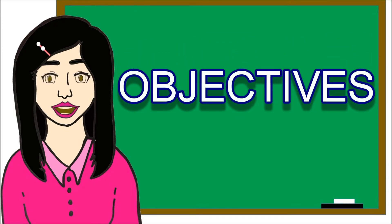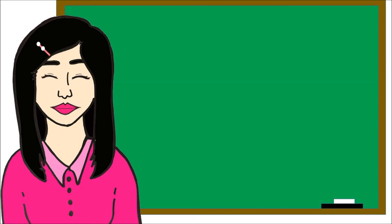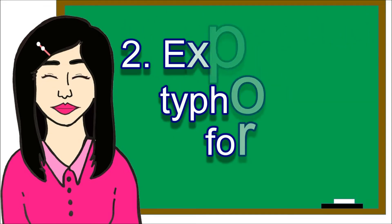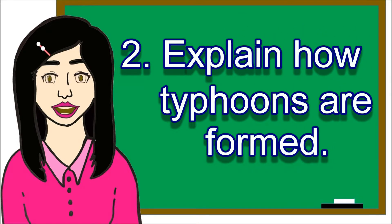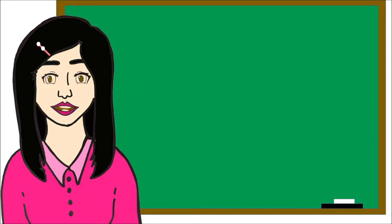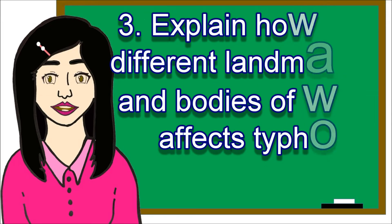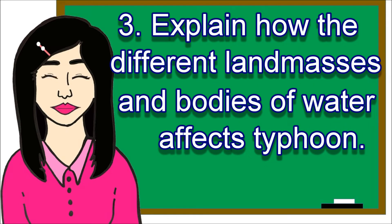Today's Objectives. At the end of the lesson, you will be able to: 1. Define what is typhoon. 2. Explain how typhoons are formed. 3. Explain how the different landmasses and bodies of water affect typhoons.